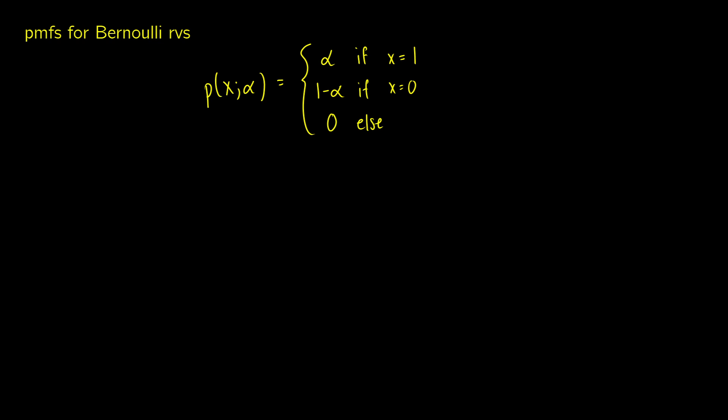Let's take a look at PMFs for Bernoulli discrete random variables. Remember, with Bernoulli RVs, x can be equal to 0 or x can be equal to 1. We only have a chance of success or a chance of failure. Here's how the probabilities are defined.